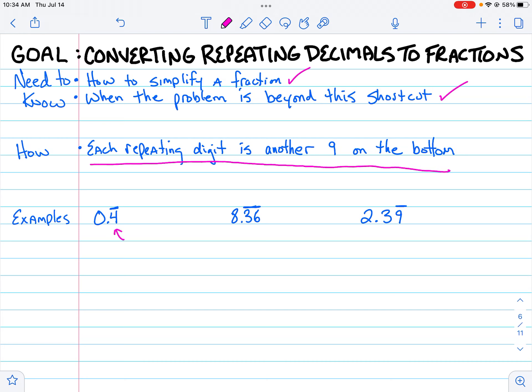So what I mean by that is, in this first example, I only have one repeating digit. It's the number 4. So I have a single 9 in the denominator and the 4 itself is my numerator. And since I don't have to simplify 4/9ths, I'm done. Simple, right?